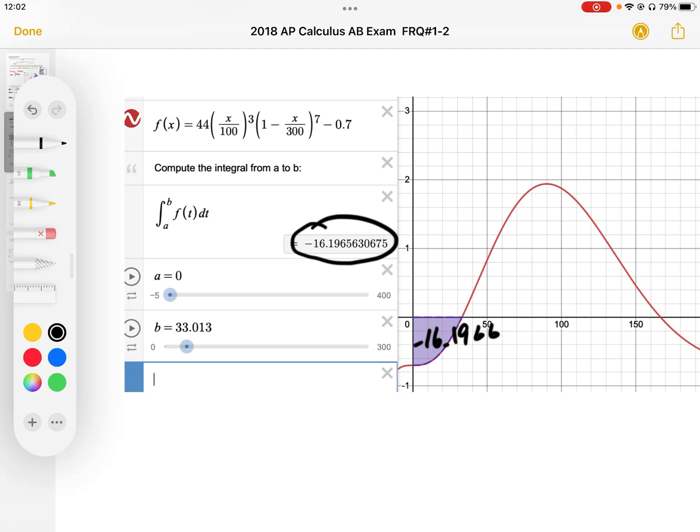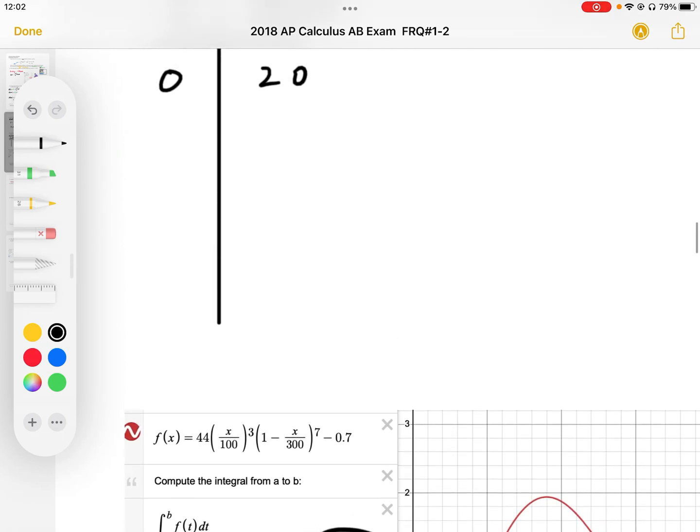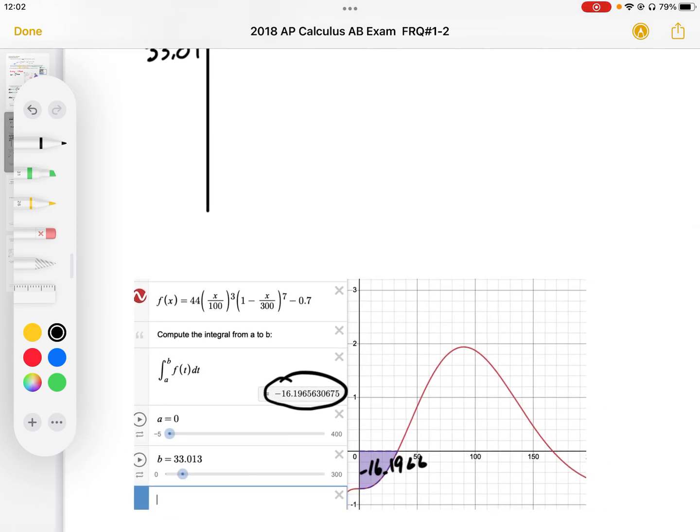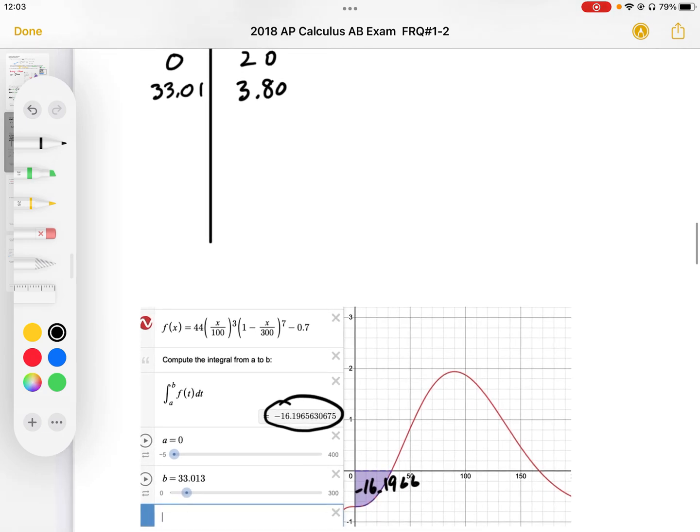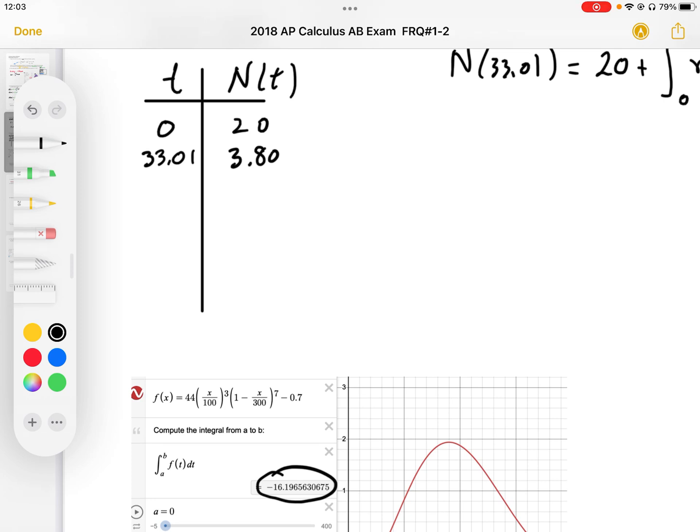So at the very start, we had 20 people, and that's the number of people who've left the line. So at t equals 33.01, we're going to start with 20, and we're going to subtract that number of people that have left the line, so we end up with 3.80 people. So we round that to probably 4 people. This looks like our minimum number of people.